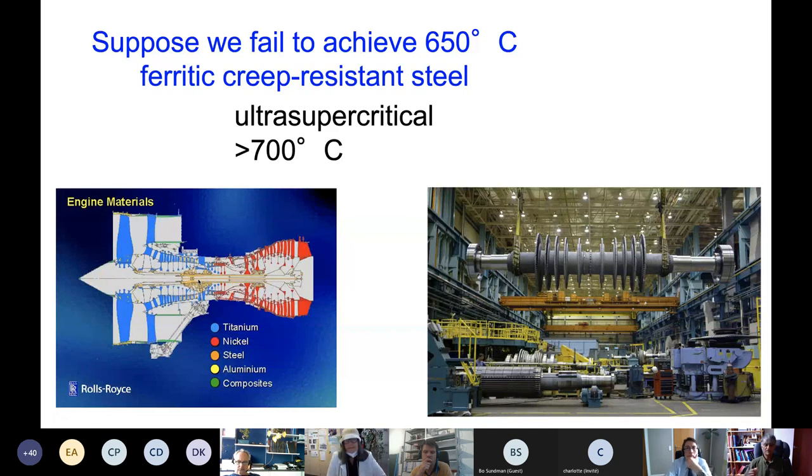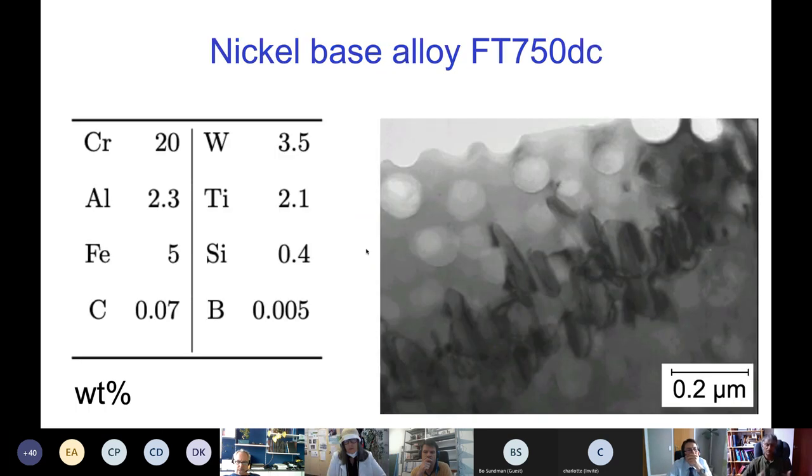We came up with an alloy here and we call this alloy FT750 DC. FT is Frank Tancret who did the work—my postdoc who did the work—and we designed it for 750 degrees centigrade steam temperature.